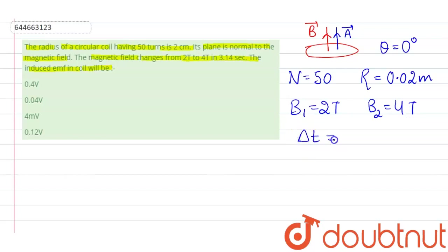So what we do first, we find out the magnetic flux initially which is equals to B1 A cos 0. So B1 is 2, area can be determined by formula pi r square, 0.02 whole square.